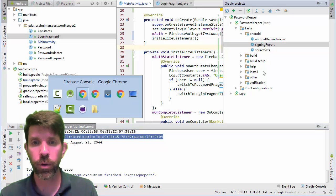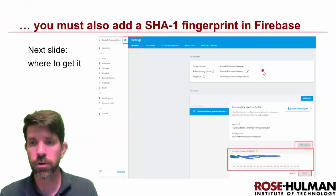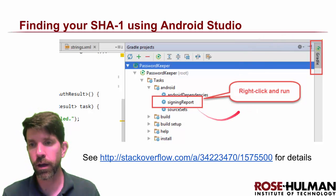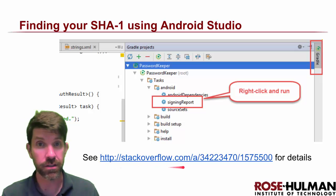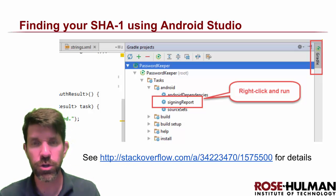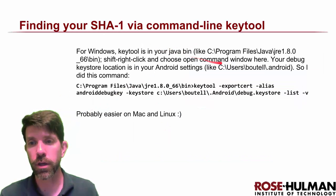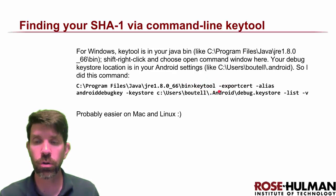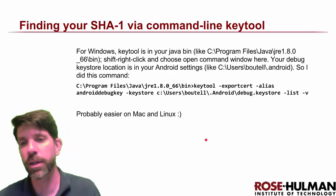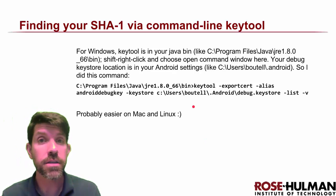There are other ways to get the SHA-1 on the command line. I found the Android Studio method on Stack Overflow, so you can look that up for more details. On the command line you can use a keytool program. It's a little wonky on Windows but probably easier on Mac and Linux, as most things are from the command line.